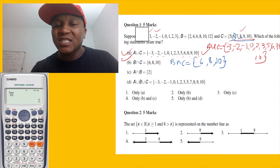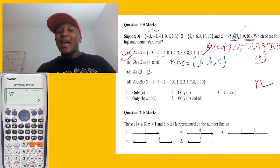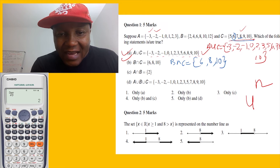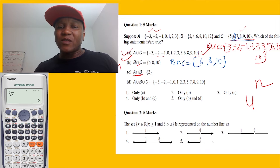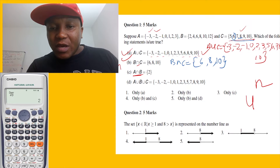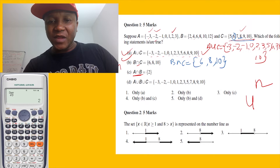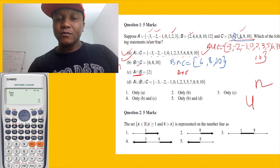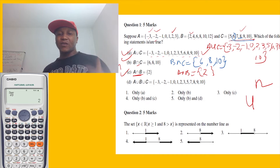So statement B is true. Now let's check A intersection B — what do A and B have in common? Going through: negative three, negative two, negative one, zero, one are not in B. Two — yes, two is common. Three — no. So A intersection B equals {2}. This is true.